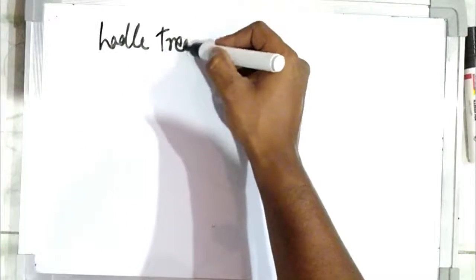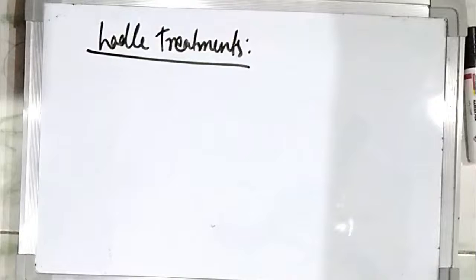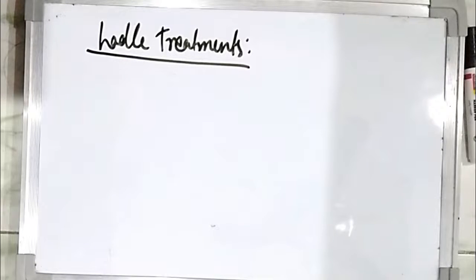Hello guys, this is Avinash and you're watching Everything Metallurgy. Today we are dealing with secondary steel making, that is nothing but the ladle treatments. In this video we look at the different functions that will be done in secondary steel making or the ladle treatments. Generally, ladles are employed to transfer molten steel from either an electric arc furnace or BOF — that means the primary steel making furnace — into the casting. In between this transfer, it is realized that the ladles can be used very efficiently as a reactor to perform some functions.